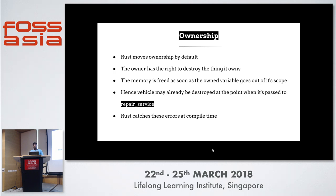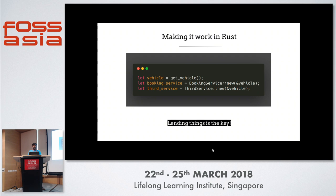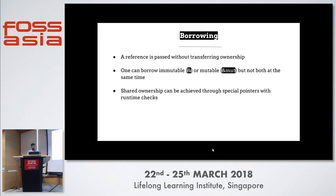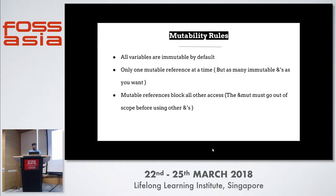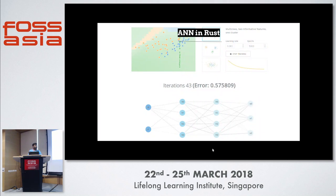Without a garbage collector, how do you share variables? That's the concept of borrowing — you use the ampersand symbol to reference values, which shares the memory location. There are two types of borrows: immutable and mutable. With an immutable borrow, you can read the value but not change it, and multiple threads can access it simultaneously. With a mutable borrow, you can change the value, but only one instance can access it at a time. This gives you memory safety and control. The rules: all variables are immutable by default, only one mutable reference at a time, and as many immutable references as you want.